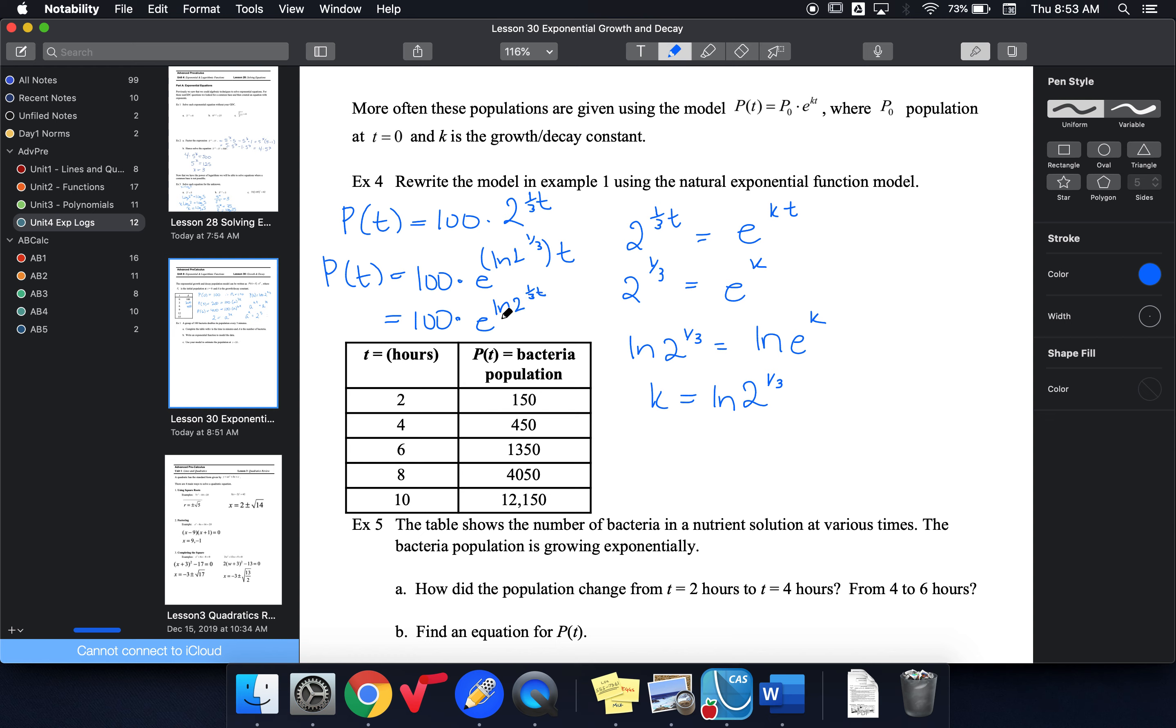So that's going to be e to the ln of 2^(1/3 t). Well, of course, we know that same base here, base of e, this is log base e. It's like it cancels, leaving me with 2^(1/3 t), which is what I started with.